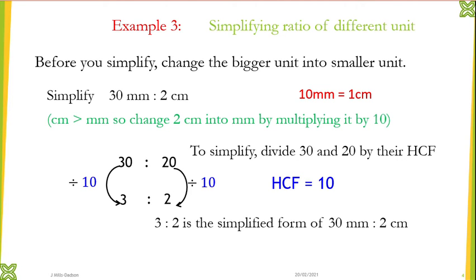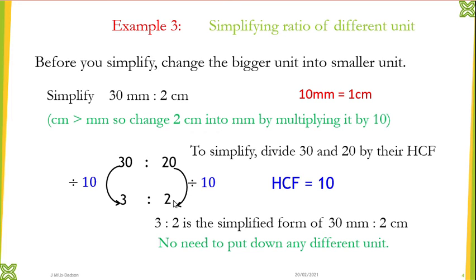When you simplify you get 3 is to 2. So 3 is to 2 is the simplified form of 30 millimeters to 2 centimeters. You don't need to put down any unit for the simplified form, because it still means the same thing as the original. So 3 is to 2 is the same as 30 millimeters is to 2 centimeters.